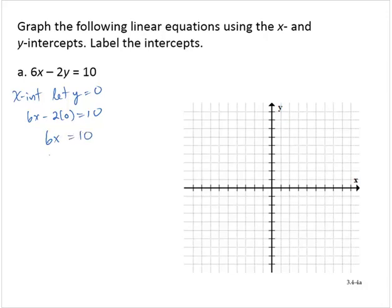So then dividing by 6, x is 10 divided by 6, which is 5 thirds. Or if it helps to write that as a mixed number, 1 and 2 thirds.